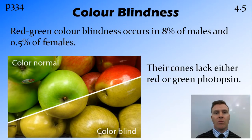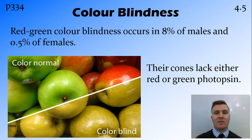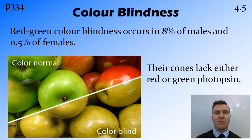The most common form of colour blindness is red-green colour blindness, and this affects about 8% of males and 0.5% of females. This is generally a hereditary disease and is sex-linked, which is why it occurs in males far more than it occurs in females. People with red-green colour blindness lack the photosensitive pigment that picks up either red or green light, so they are unable to distinguish between red and green.